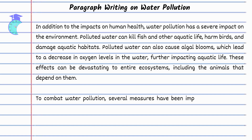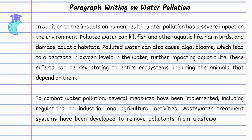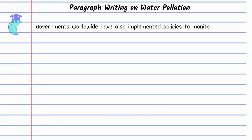To combat water pollution, several measures have been implemented, including regulations on industrial and agricultural activities. Wastewater treatment systems have been developed to remove pollutants from wastewater before releasing it into water bodies. Governments worldwide have also implemented policies to monitor and reduce water pollution levels.